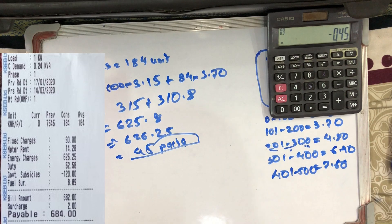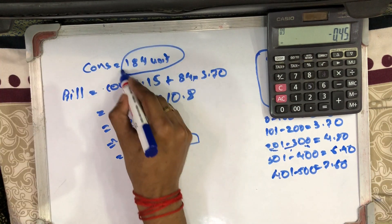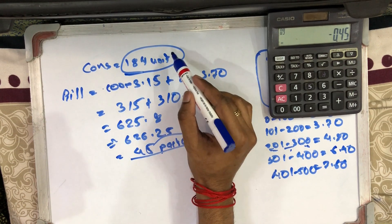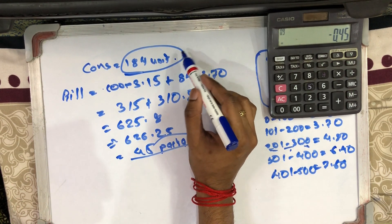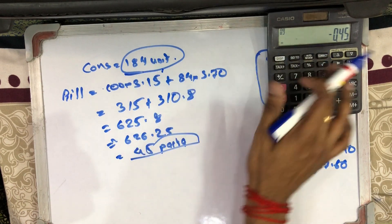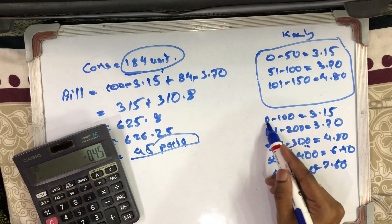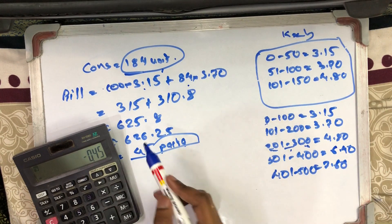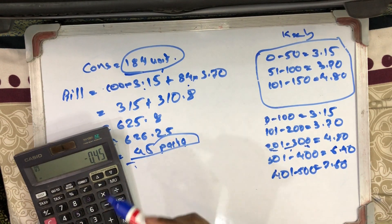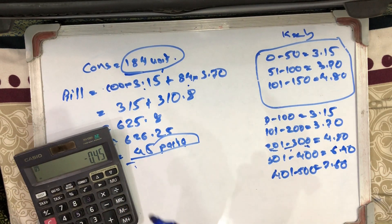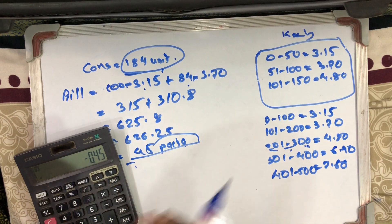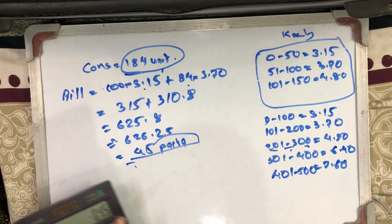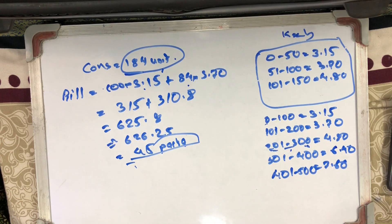If you need to take a look at them, please comment on what we are looking at. What will be our consumption? How did we get the consumption given to the 184 units? The answer is that the slab is going to be divided. We have to calculate the current bill — we have fixed charge, government subsidies, etc. — and then calculate the final bill.